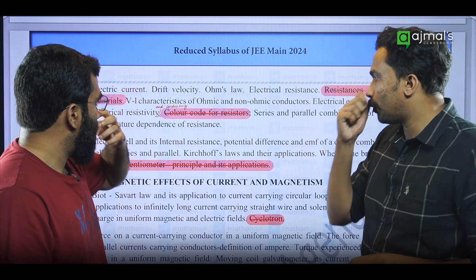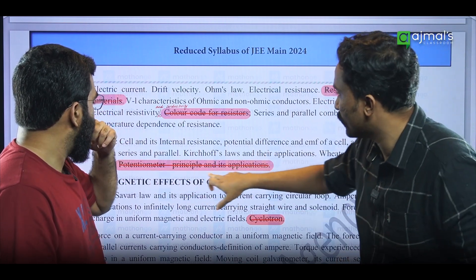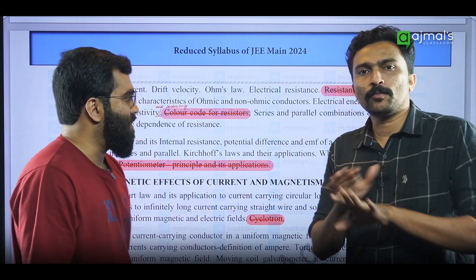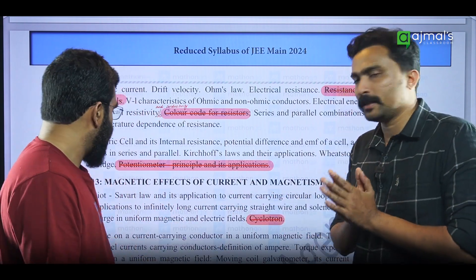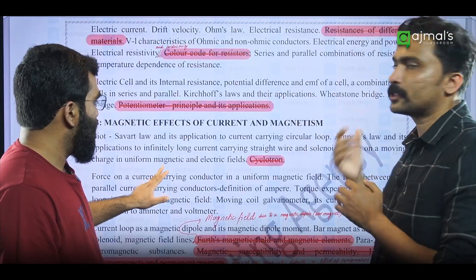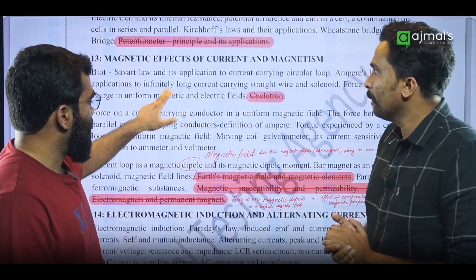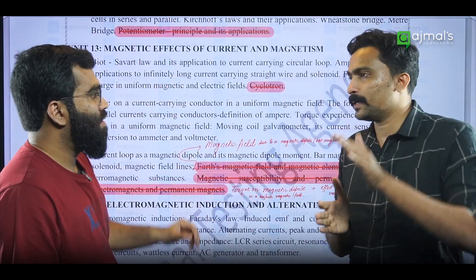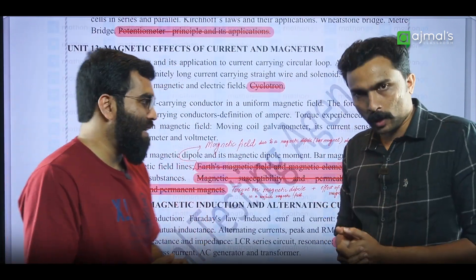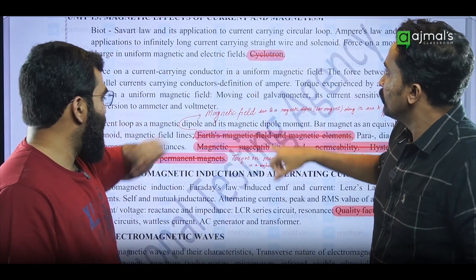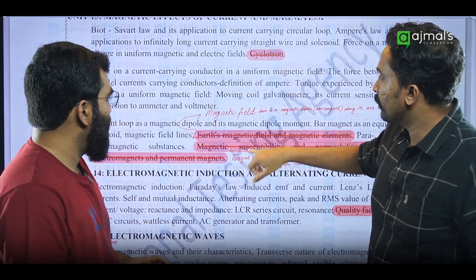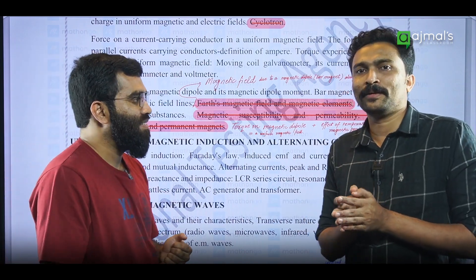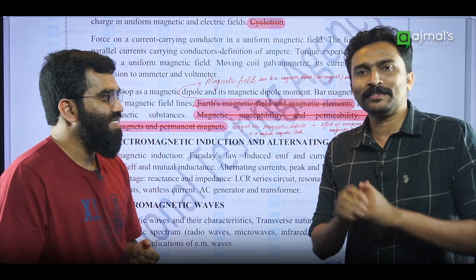There is a potentiometer — potentiometer: principle and its application. Potentiometer is a practical physics topic. But if you have a meter, you can examine it. This is a bonus — it is a potentiometer. Cyclotron is a one-way topic. Earth magnetism is a one-way topic.